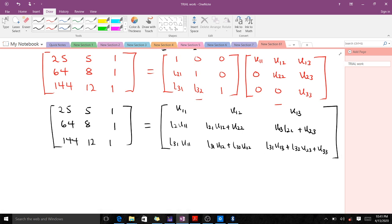The next thing we do is make comparisons. By equality of matrices, if two matrices are equal, their corresponding components are equal. When you make comparisons, U11 is equal to 2.5, U12 is equal to 5, and U13 is equal to 1. We have to find 9 unknown variables. Right now we just found 3 of them, so we are left with 6. Our work is becoming easier.